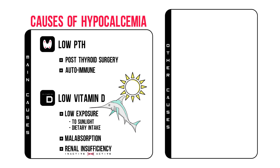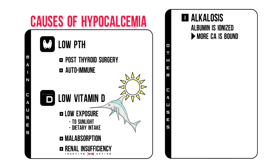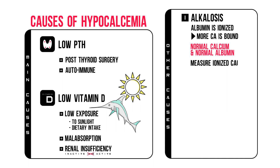Now we're missing a few — I'll skip the extremely rare ones and focus on the ones I find more important. Alkalosis: in severe alkalosis, proteins like albumin are ionized, causing free calcium to bind with these proteins and causing effective hypocalcemia. Note that total serum calcium is normal and albumin is normal as well — it's just that more calcium is bound to that albumin. In this specific instance you'd need to measure ionized calcium directly. Fortunately, most ABG analyzers do that automatically.